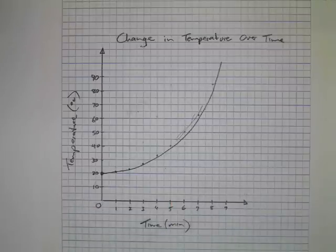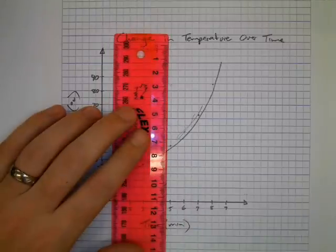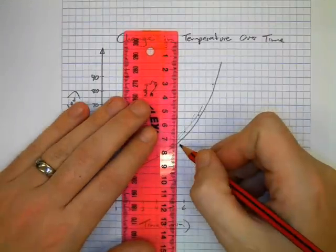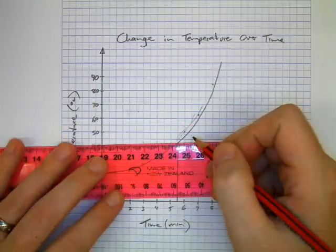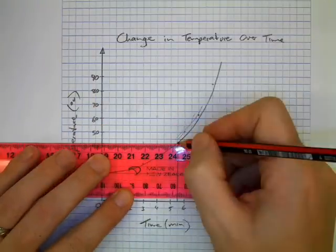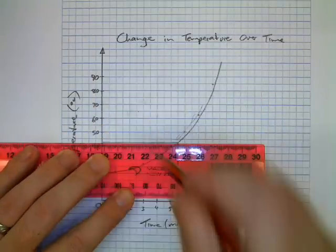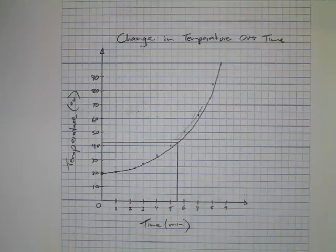Again, you can use this to interpolate or extrapolate. So for example if I were to draw a line here at 5 and a half minutes, then we can see that the temperature was around about 42 or 43 degrees. And there you have it.